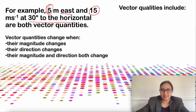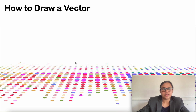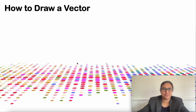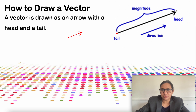Examples of vector quantities are displacement, velocity, acceleration, force, weight, momentum, etc. So how do you draw a vector? A vector is drawn as an arrow with a head and a tail. The length gives the magnitude and the arrow indicates the direction. The starting end is called the tail and the pointed end is called the head.